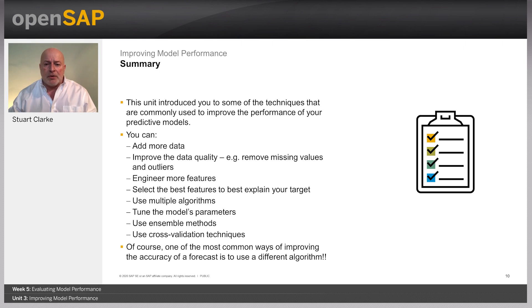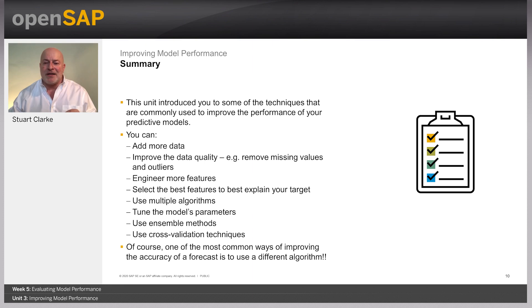This is a short summary of the techniques commonly used to help improve model performance. One of the most common ways to improve accuracy is to try a different algorithm — for example, if you're using decision trees and not getting good results, try a regression or a neural network and see if this improves performance. This brings me to the end of this unit; in the next unit we're going to take a look at the CRISP evaluation phase.